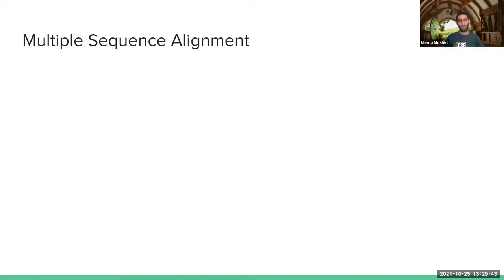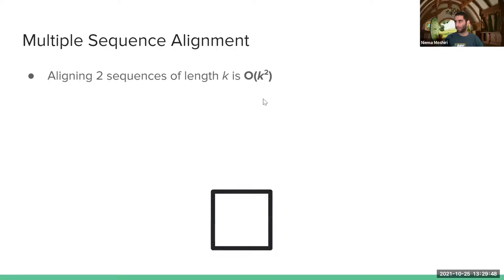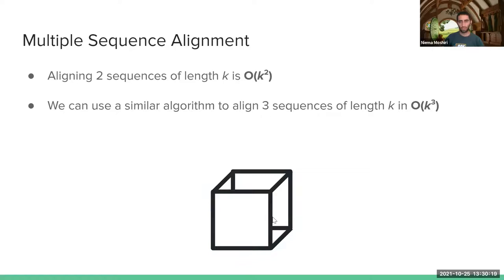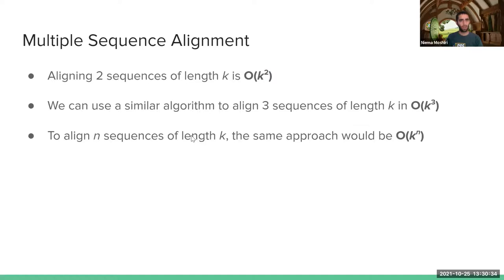Now let's introduce multiple sequence alignment. Aligning two sequences is O(k²) — on the order of k squared. It turns out we can use a similar algorithm to align three sequences by filling a three-dimensional cube instead of a square matrix. In general, to align n sequences of length k, this approach would be O(k^n) — it scales proportionally to k raised to the power of the number of sequences you have.